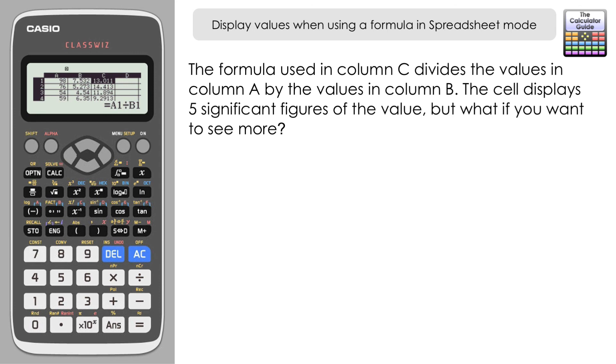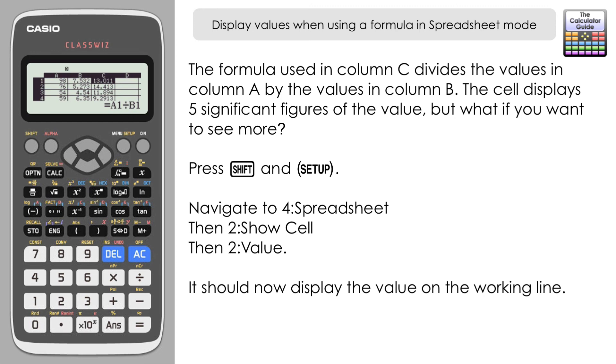So if you press shift and then setup and you need to navigate down to four spreadsheet, and then to show cell, and then finally to value. And then if we go back to the spreadsheet, then it's now displaying the full calculator display of the value there. So we've got more than the five significant figures if we wanted to see a fuller value. Scroll down you can see that that's displaying for each row.